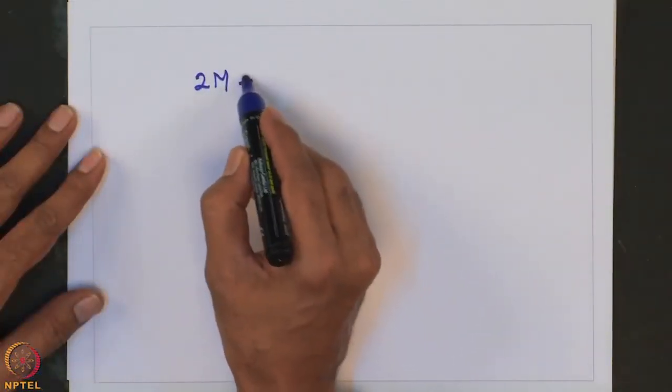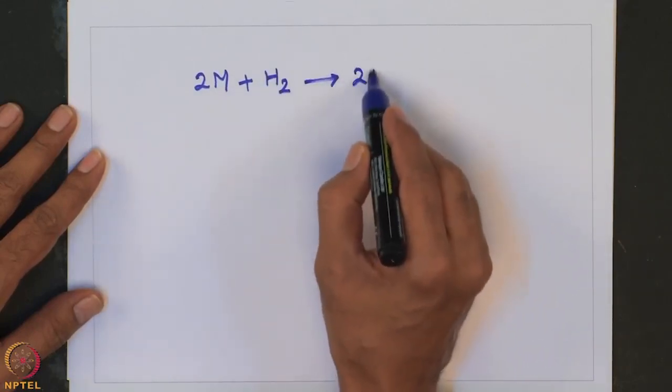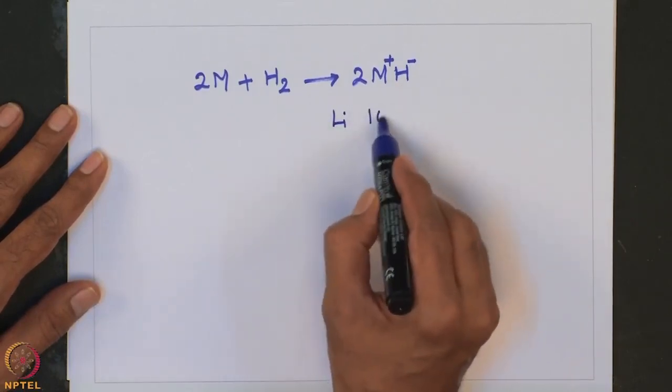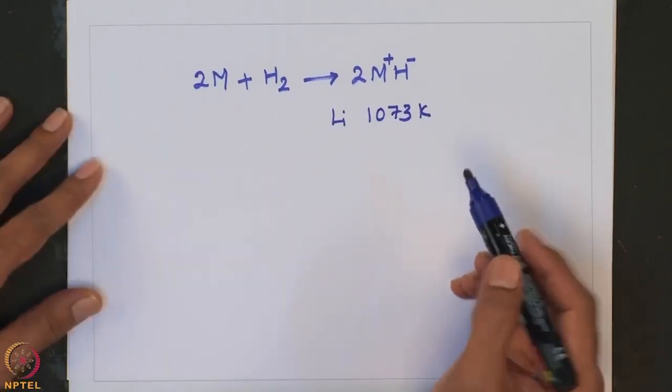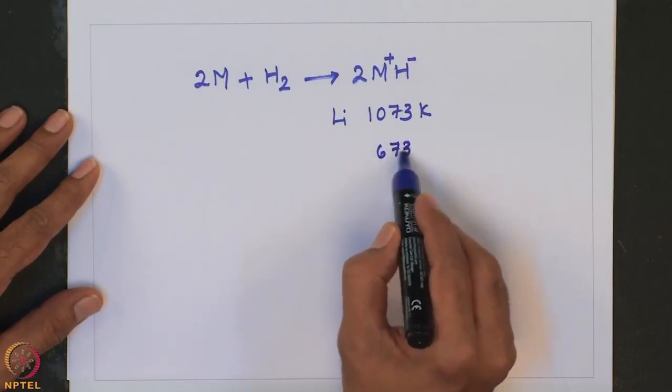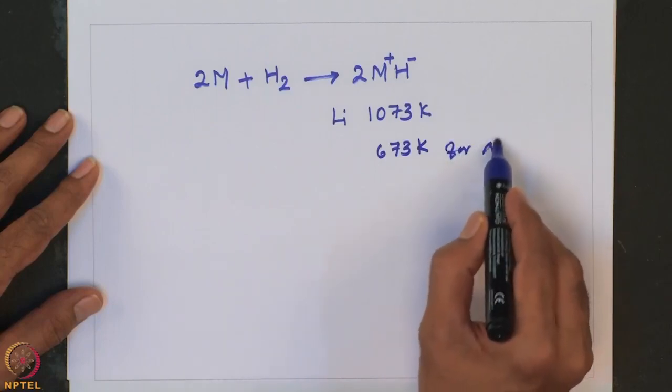Let us look into the interaction of alkali metals with hydrogen to form hydrides. As already mentioned, hydrogen reacts with alkali metals and alkaline earth metals to form ionic hydrides. Most alkali metals react with hydrogen to form the corresponding hydride. In case of lithium, the temperature required is quite high — 1073 K — whereas for other alkali metals the reaction happens at a relatively lower temperature of 673 K.